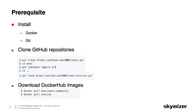Before we get started, you need Docker and Git support on your host machine. If you don't have them installed, please refer to our tutorial for the installation details. Once you have the support ready, please use the git clone command to download the Onyx source code and the Onyx tutorial material from our GitHub repository. You need both repositories for the rest of the tutorial.